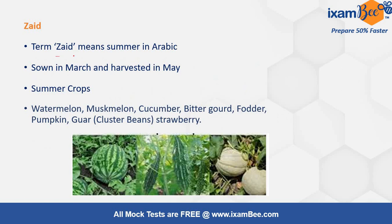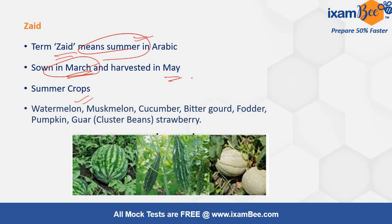The third one is Zayad. Zayad means summer, and these crops are also known as summer crops because they are sown in summer time, that is in March, and are harvested in May.